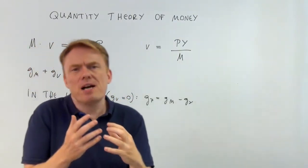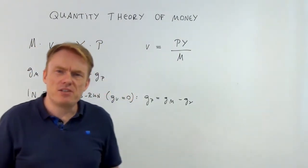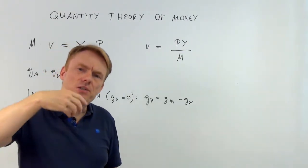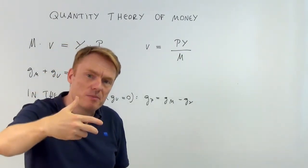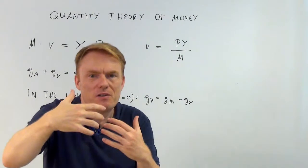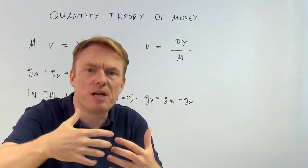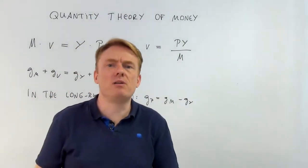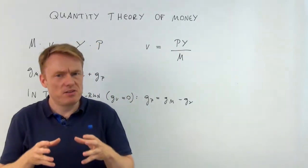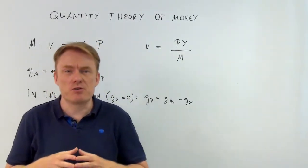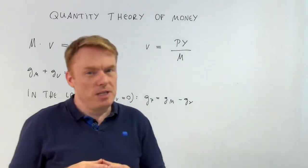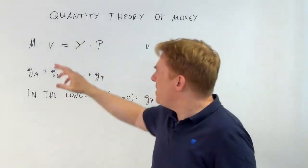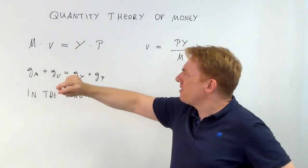A velocity of money of 5 means that you need 5 times your amount of money to be able to buy real GDP in your economy. That's the way to interpret, to understand the velocity of money. So that's V, the velocity of money.